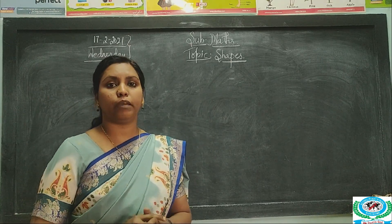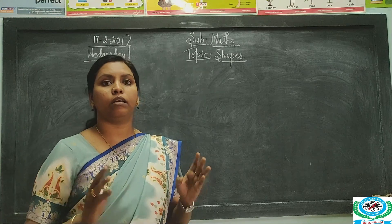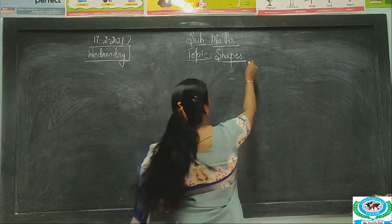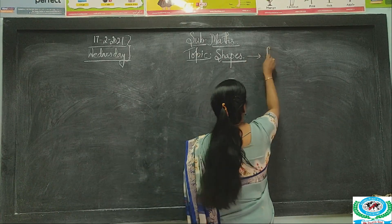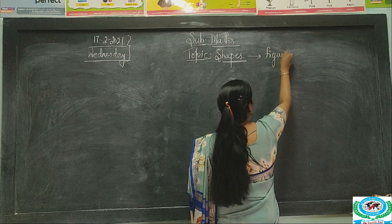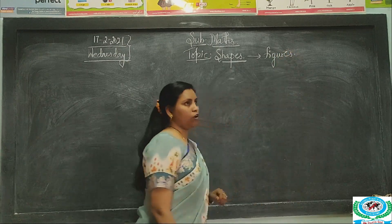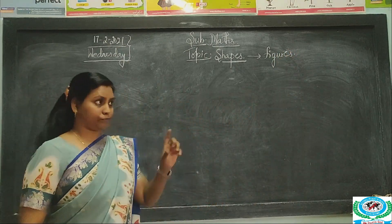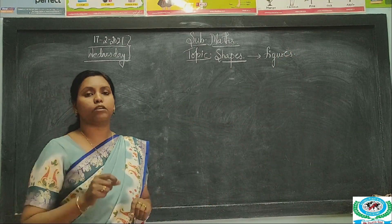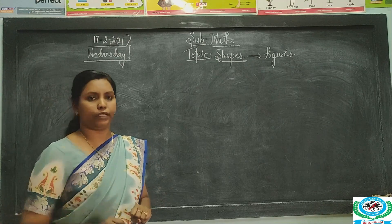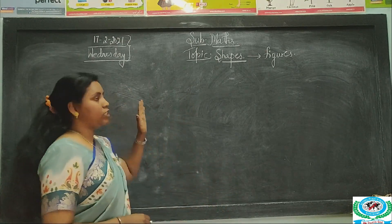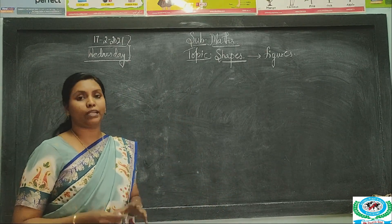A shape is a figure. Shapes are nothing but figures — just a drawing, or it is called a figure. So what shapes do you have in maths?